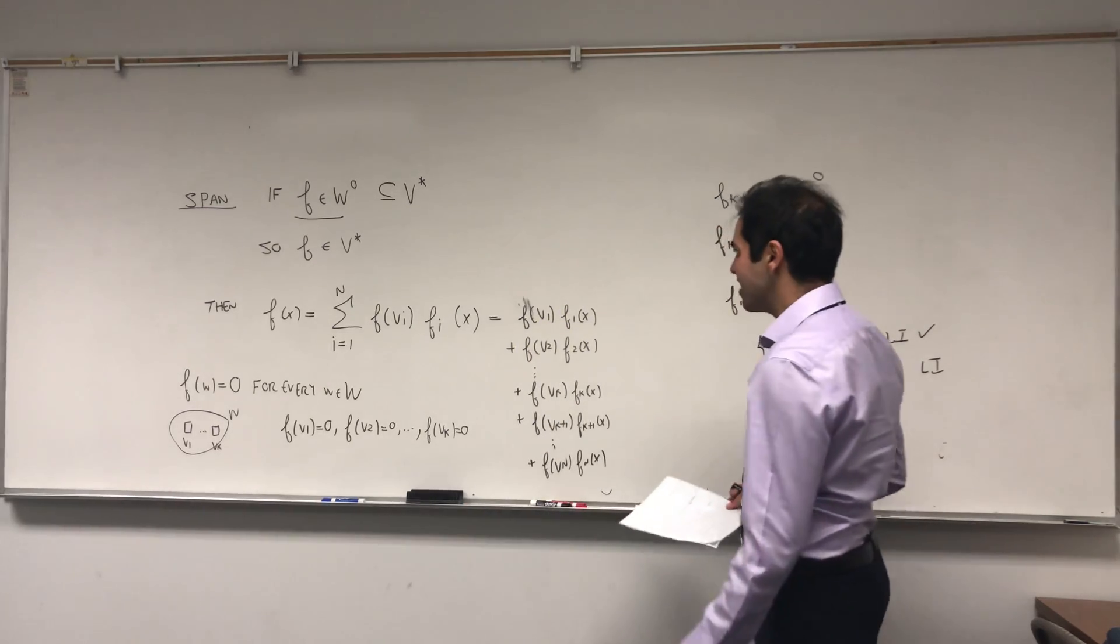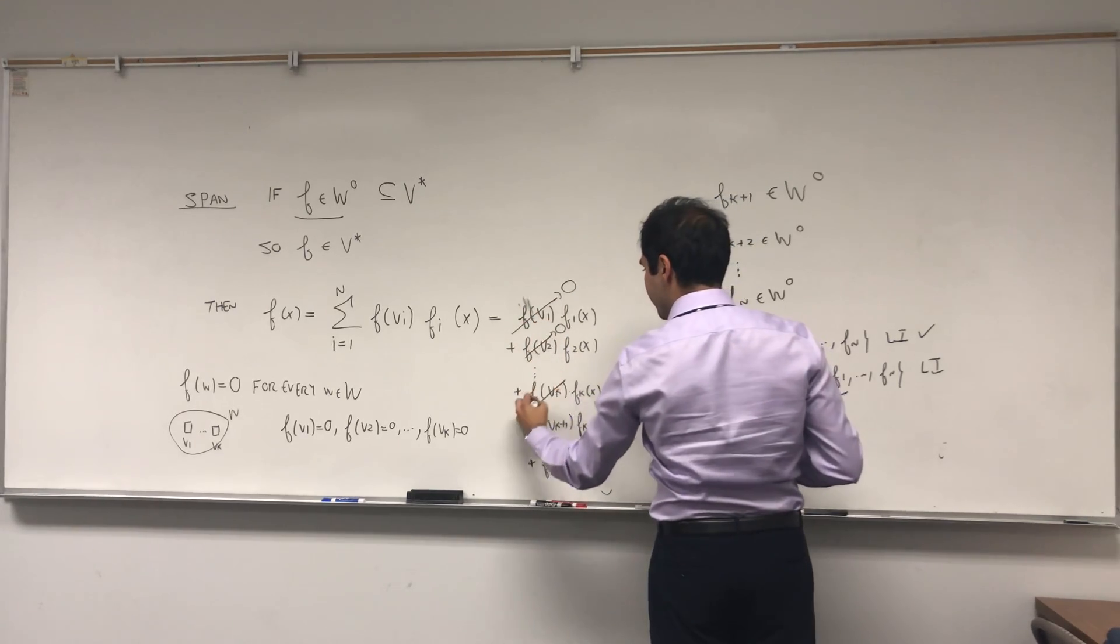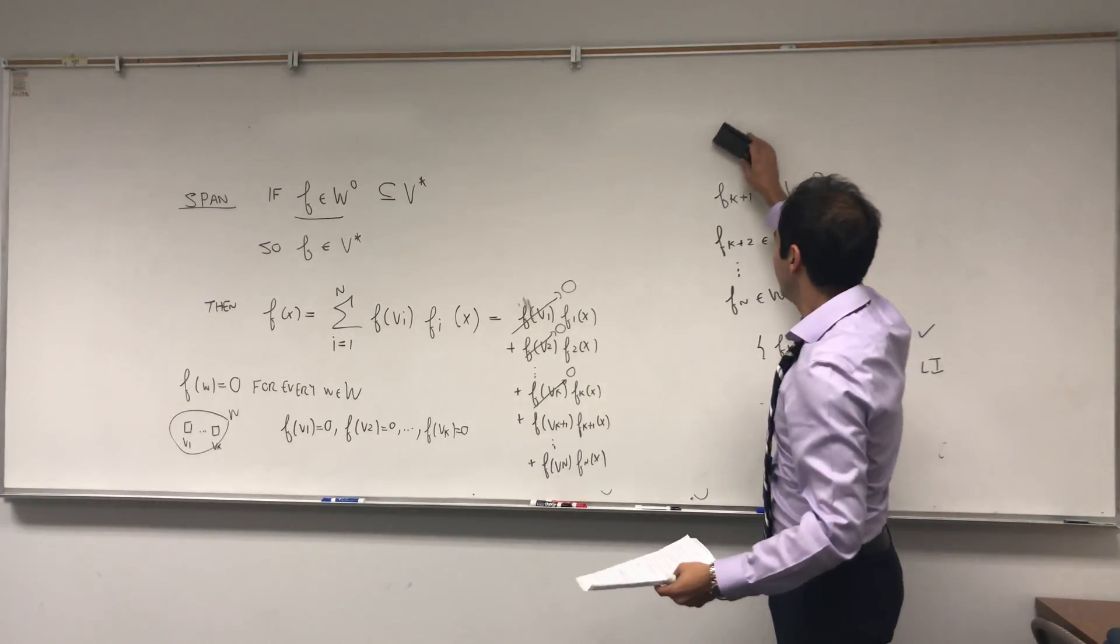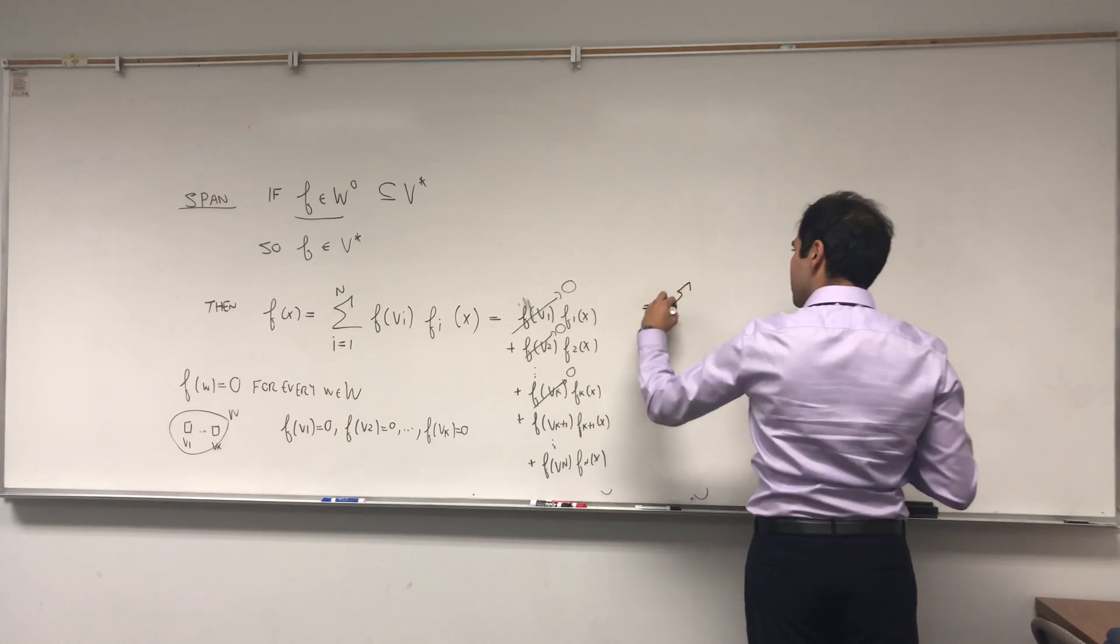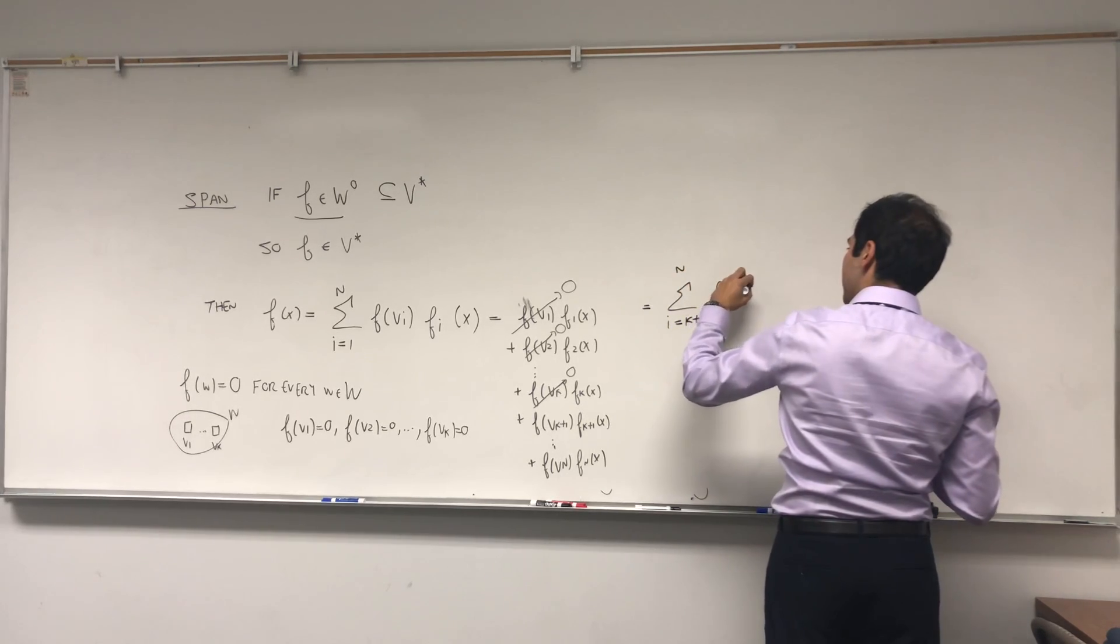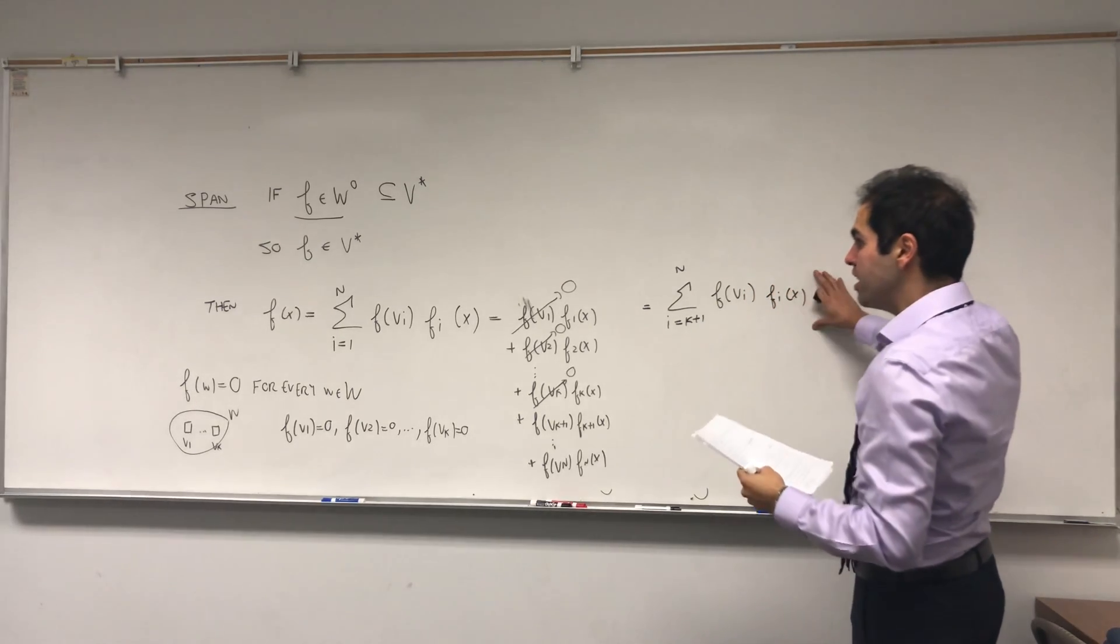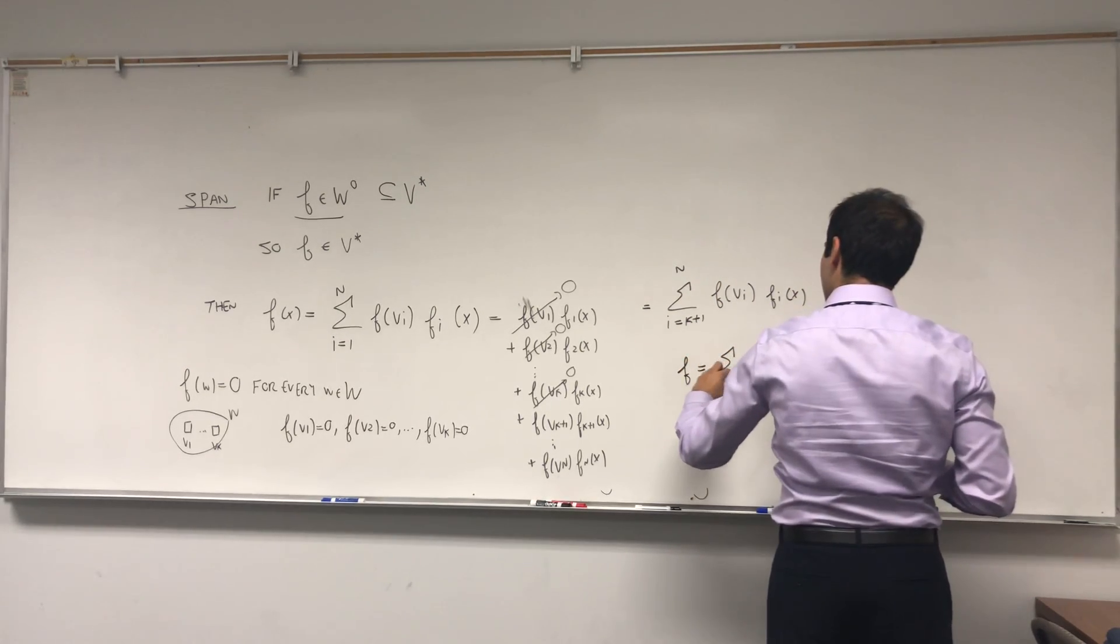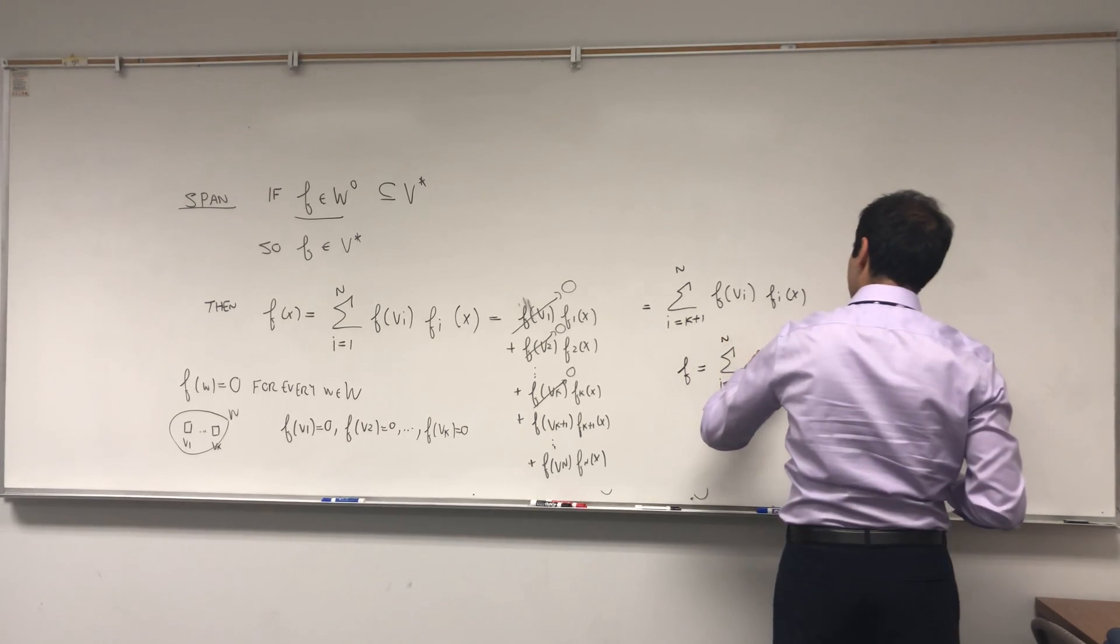That's what this sum means, and the point is all those terms here, we just said they cancel out. They just disappear. So really what you're left with is the sum of the k plus one up to n terms. So that equals the sum from i equals k plus one up to n of f(vi) and then fi(x). But this is really, so in other words, f is the sum from i from k plus one up to n of f(vi) fi.